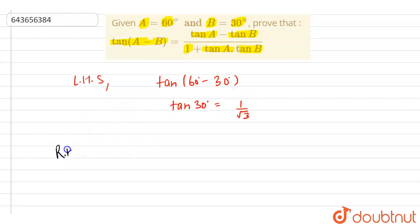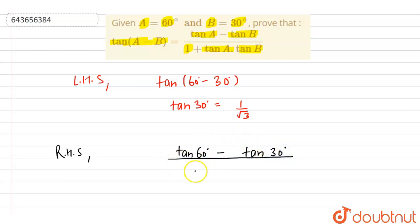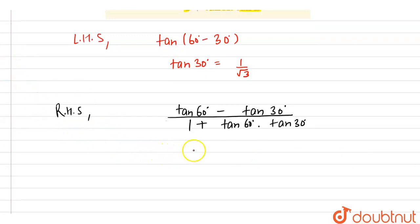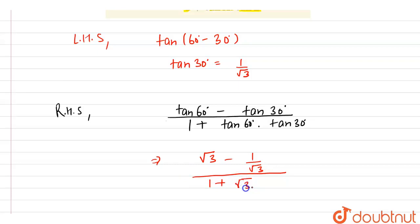Now let's solve the RHS, that means right hand side. At RHS we have tan A, where A is 60 degrees, so tan(60 degrees) minus tan B, that means tan(30 degrees). This whole divided by 1 plus tan A into tan B — that is tan(60 degrees) into tan(30 degrees). We know that tan(60 degrees) equals root 3, and tan(30 degrees) equals 1 by root 3. So the denominator becomes 1 plus root 3 times 1 by root 3, and the root 3 gets cancelled.